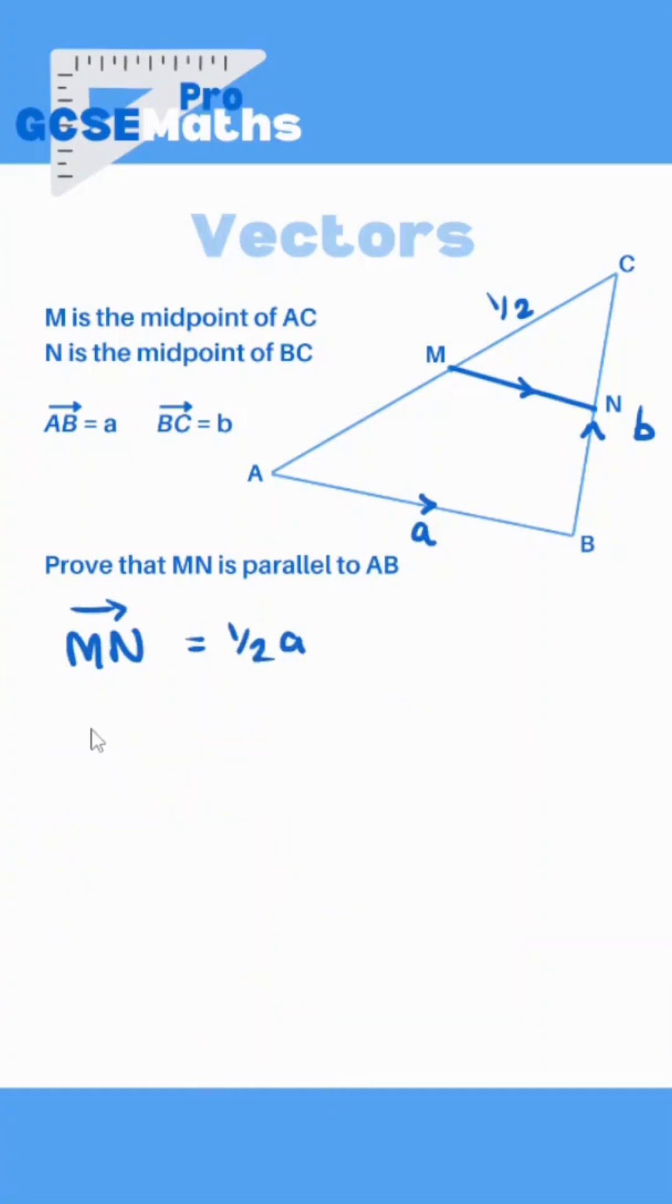So MN is a half a and AB is just a. To prove that two vectors are parallel you have to prove that one is a multiple of the other. Luckily here we don't have any b so we just have to look at the scale of the a's. I normally say how do I go from the smaller one to the bigger one.